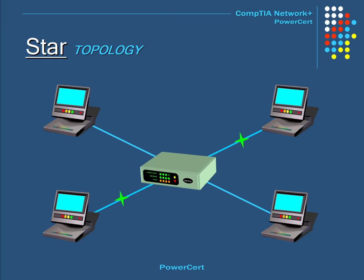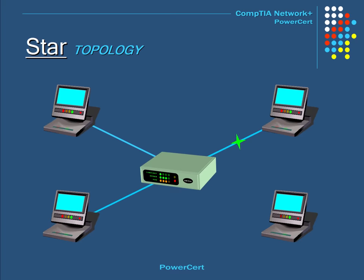One of the major benefits of the star topology is that if one computer failed or if there was a break in the cable, the other computers would not be affected because each computer has their own cable connection. However, a disadvantage is that if the central hub or switch fails, then all the computers on that central point would be affected. This is called a single point of failure — if this happens, the entire network goes down.